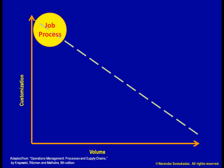As we move down the diagonal, we are producing larger quantities of outputs with less customization. We produce a batch of this, then change over and produce a batch of that, then change over and produce a batch of something else, then perhaps come back to a batch of the first item, and so on. We call this a batch process.